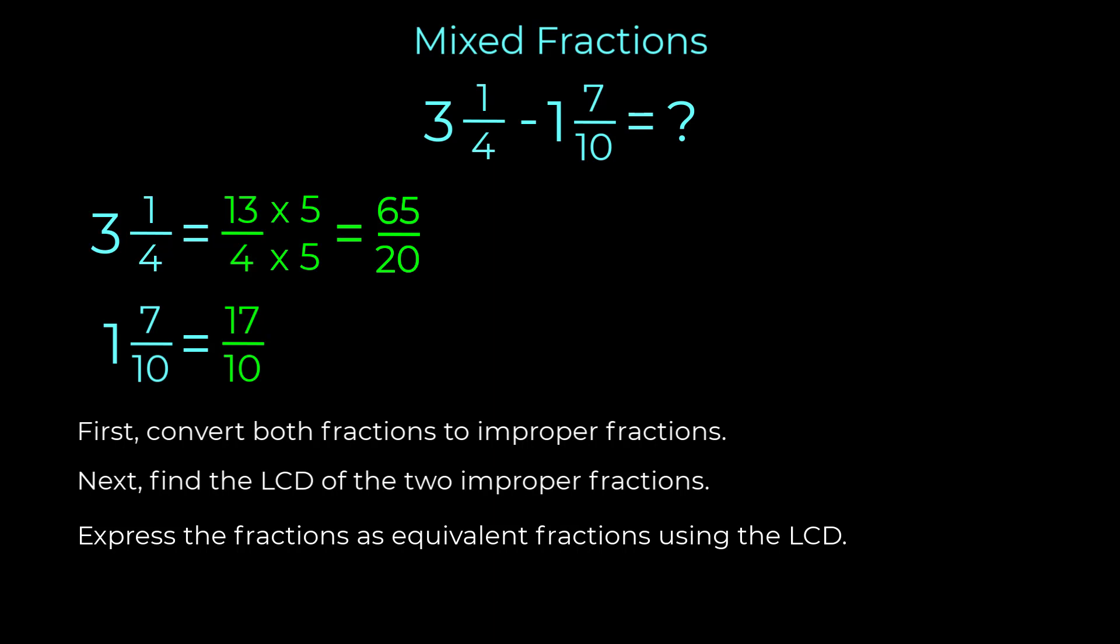In order to express seventeen tenths as an equivalent fraction with twenty as the denominator, I would multiply both the numerator and denominator by two. Two times seventeen is thirty-four.